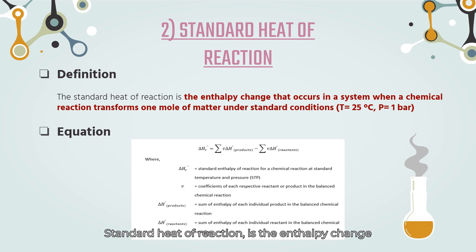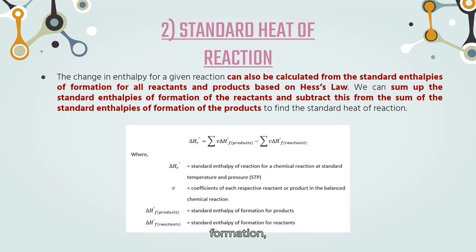Standard heat of reaction is the enthalpy change that occurs in a system when a chemical reaction transforms one matter under standard condition. From the standard enthalpies of formation, we can also calculate the change in enthalpies for all reactants and products based on Hess's Law. To find the standard heat of reaction, we sum up the enthalpy for each product minus the sum of enthalpy of reactants.